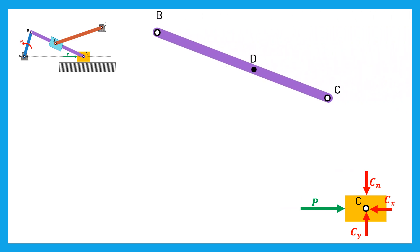Let's consider now the bar BC. As the bar BC exerts on the slider two forces CX and CY, the slider exerts on the bar BC the same forces but in opposite direction. Also, the bar BC is connected to the slider in D using a prismatic kinematic pair. Hence, the slider applies a normal force DN on the bar BC, perpendicular to the bar BC. The bar BC is also connected to the bar AB using a revolute joint; thus the bar AB exerts two reactions BX and BY on the bar BC.